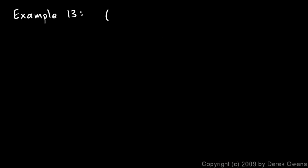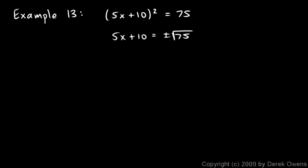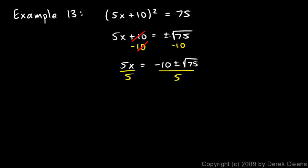Example 13 is this: 5x plus 10 squared equals 75. Same technique here — we have something squared, so we get rid of the squared by square rooting it. On the left I just get 5x plus 10, and on the right I have plus or minus the square root of 75. So we want to solve for x. I'll subtract 10 from each side and get 5x is equal to negative 10 plus or minus the square root of 75. Then I will divide both sides by 5. It looks like you're done, but this will actually simplify some.